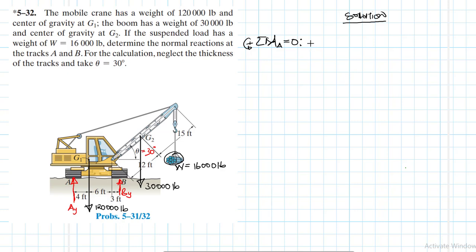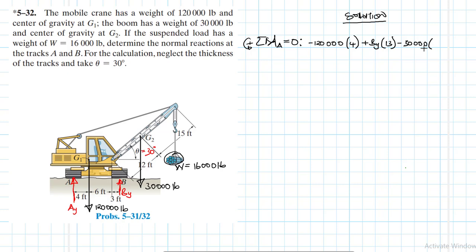We have 120,000 pounds causing a clockwise moment, so it will be negative: minus 120,000 times its lever arm. Then By causes an anticlockwise moment, so it will be positive. The lever arm about point A is 4 plus 6 plus 3, which equals 13. We also have 30,000 pounds for the weight of the boom, giving a clockwise moment, which will be negative: minus 30,000 times its lever arm.